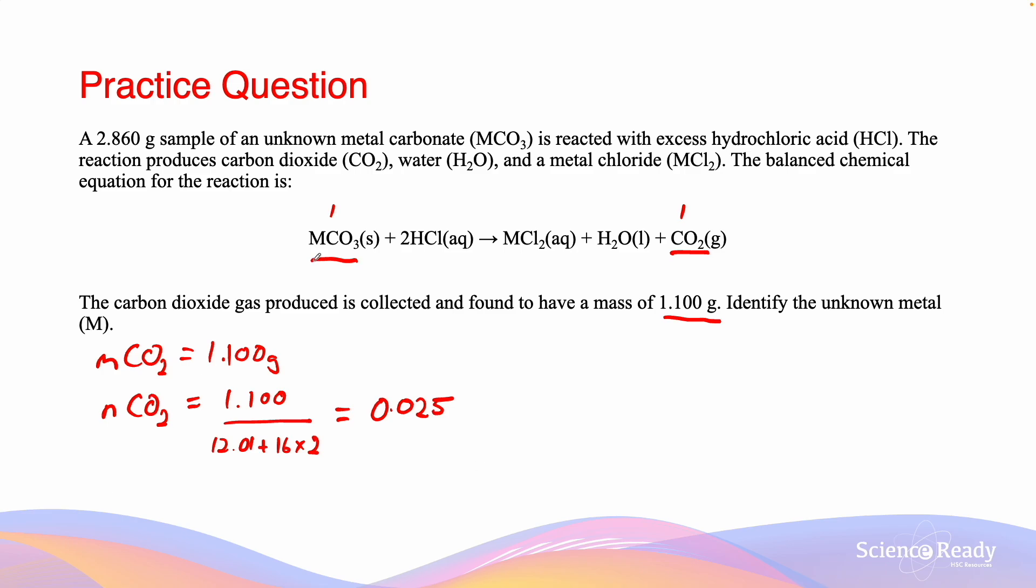The number of moles of MCO3 must equal the number of moles of CO2 because they're in a 1 to 1 stoichiometric ratio. So the number of moles of MCO3 equals 0.025. Since we know there are 0.025 moles of MCO3, this must be equivalent to the total mass of the carbonate, which is 2.860 grams.